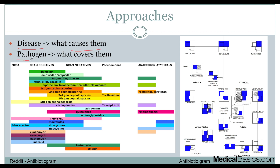From there, now that you have a set of pathogens that cause, let's say, pneumonia, you have to think about what will cover them. These are very different. When you're dealing with a disease, I'll show you a resource that you can utilize to make this very easy — to look up what are the common pathogens that you're dealing with, and then what are the common antibiotics that will cover them.